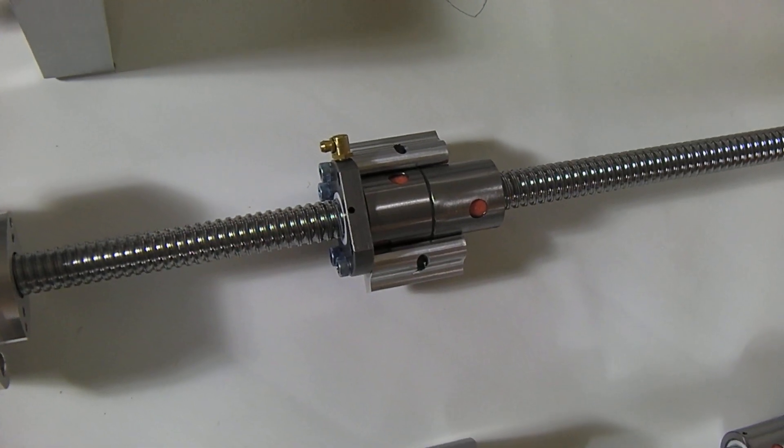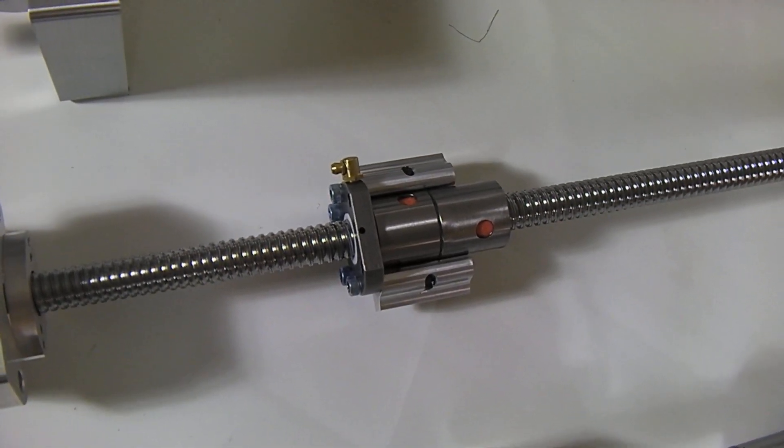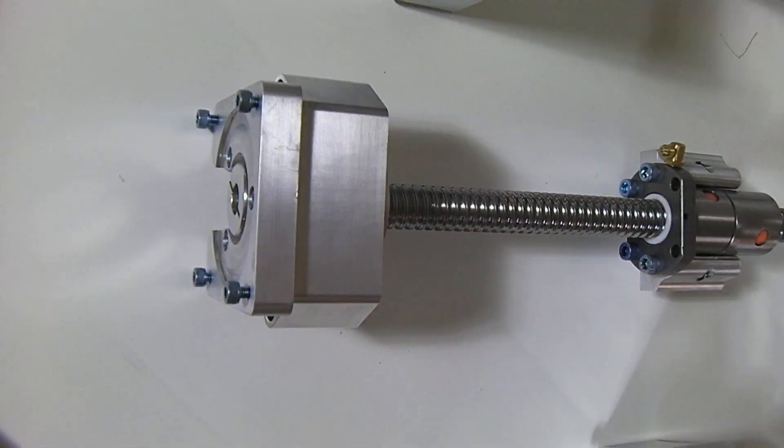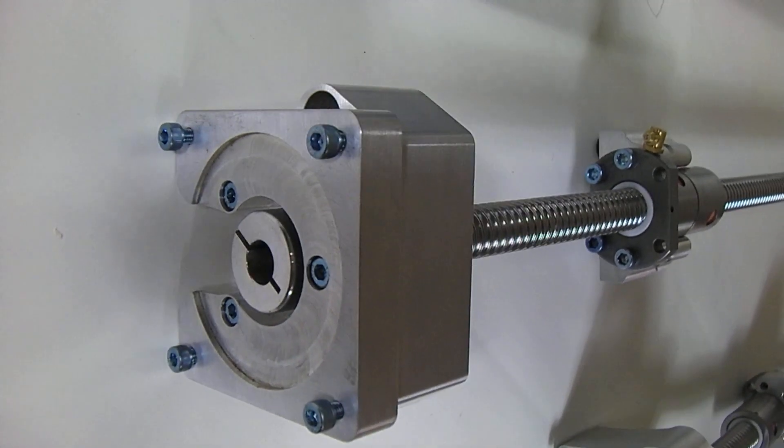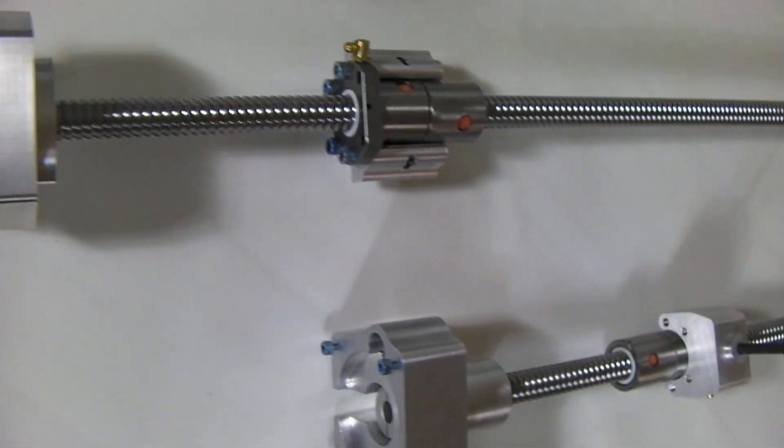The double nuts I redo the shims so they'll have positive preload and you'll get zero backlash. This is the X screw - it has a 30 millimeter coupler with a half inch bore, NEMA 34 mount, and on the other end...